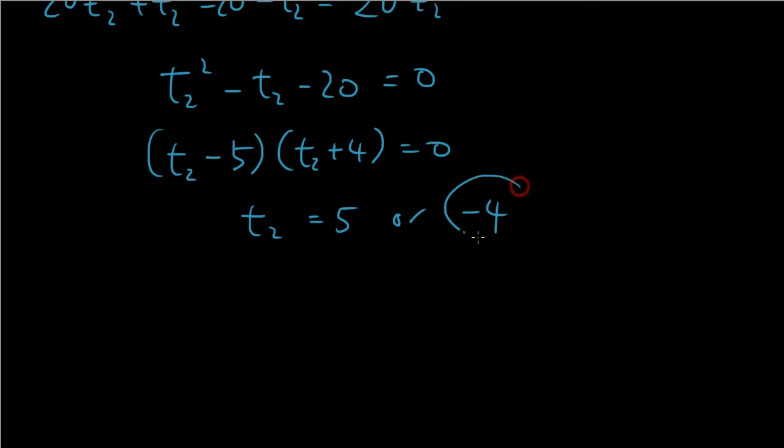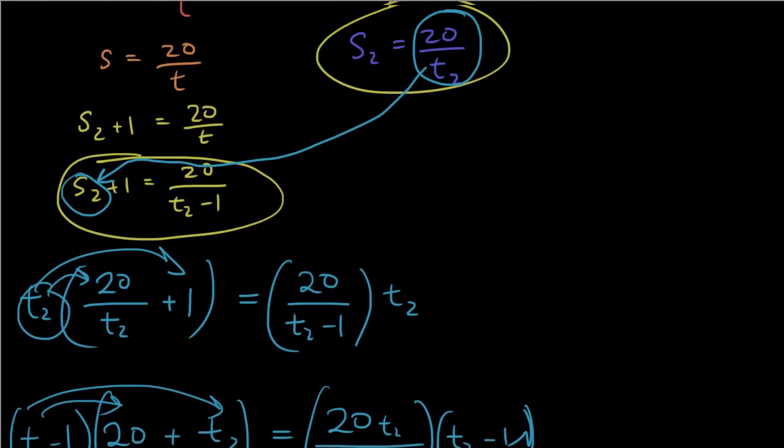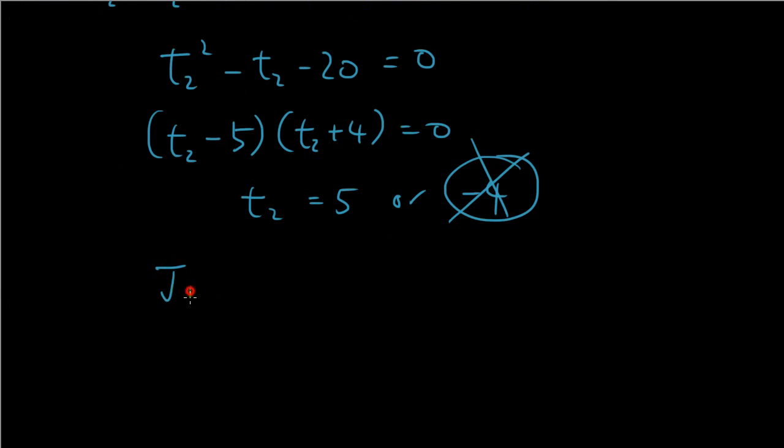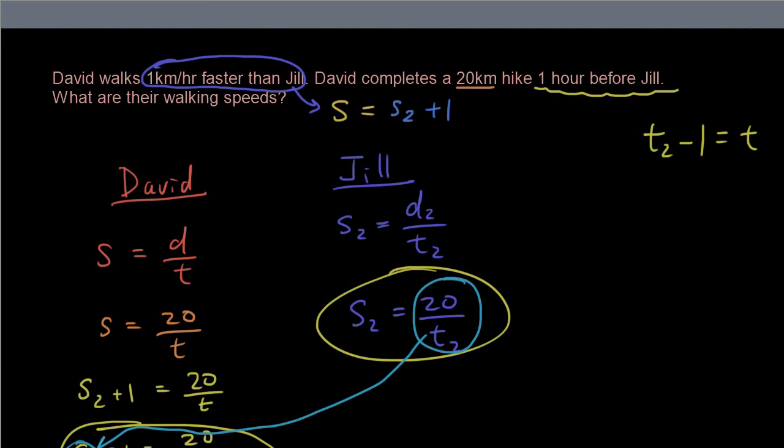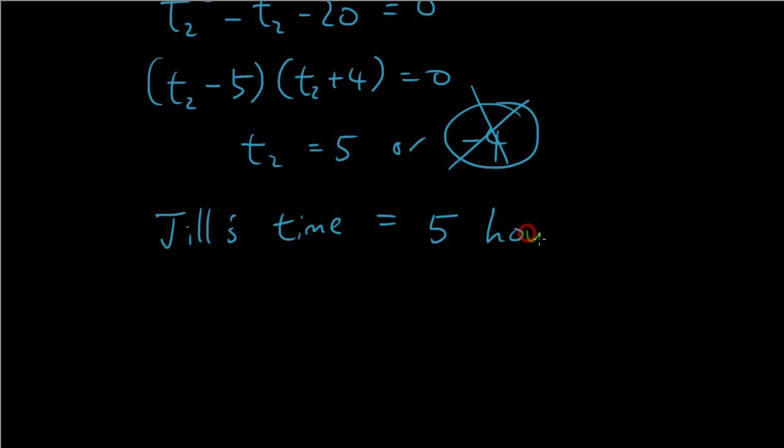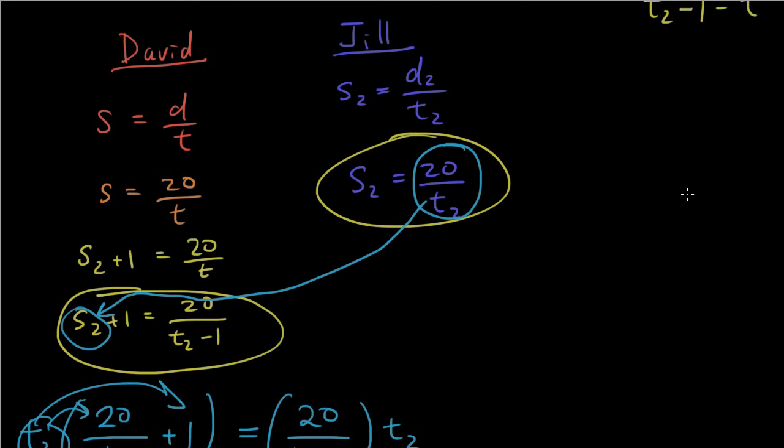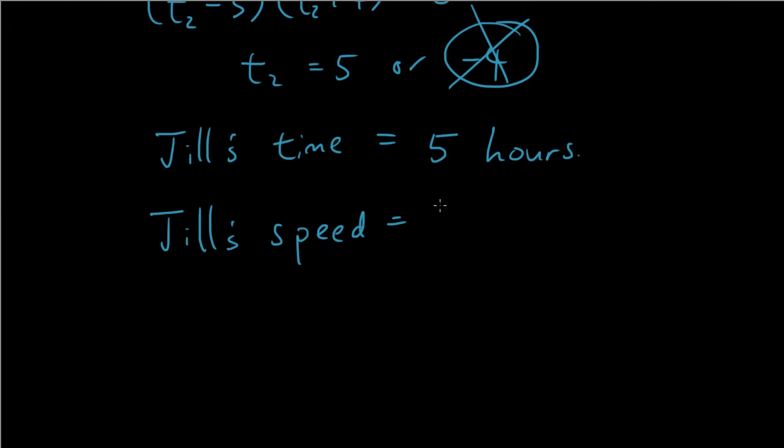Time cannot be negative, right? So therefore this negative four is out. Time for T2 was Jill's time. So Jill's time equals five hours. Which means Jill's speed must be equal to 20 divided by five, which is four kilometers per hour.